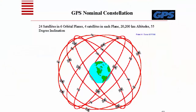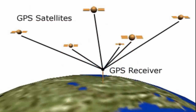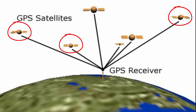GPS is a satellite-based navigation system composed of a network of satellites placed into orbit by the United States Department of Defense. GPS works in all weather conditions anywhere in the world 24 hours a day. A GPS receiver must be locked onto the signal of at least three satellites to calculate a two-dimensional position, latitude and longitude, and track movement. With four or more satellites in view, the receiver can determine the user's three-dimensional position, which includes latitude, longitude, and altitude.